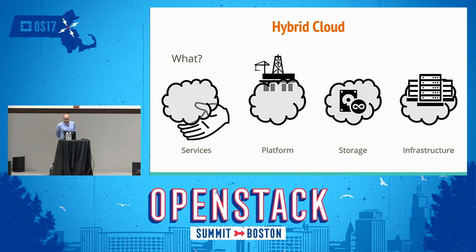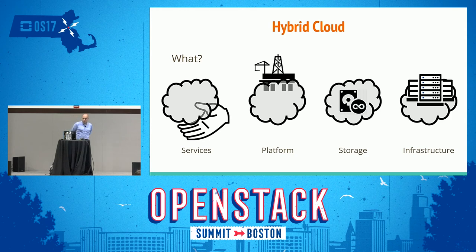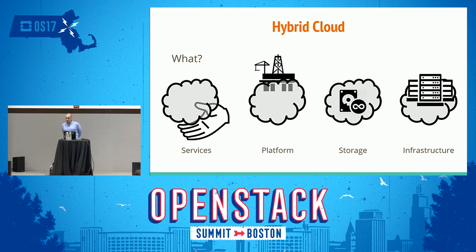We have storage services in the cloud — for example, external storage like AWS S3, managed database services like AWS RDS, or Google Bigtable or Spanner. We have cold storage like AWS Glacier, and so on. And we have infrastructure: compute, network storage — classic infrastructure service.